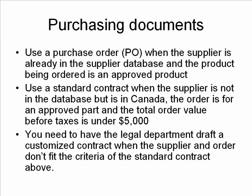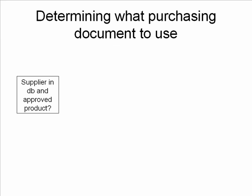Here's what I did: instead of just simply listing them, I showed the group how we could illustrate them. The headline is 'Determining what purchasing document to use.' The first question you need to ask is: is the supplier in the database, and is this order for an approved product? If both of those are true, then yes, we can use a purchase order — a very simple document, easy to complete and get out.